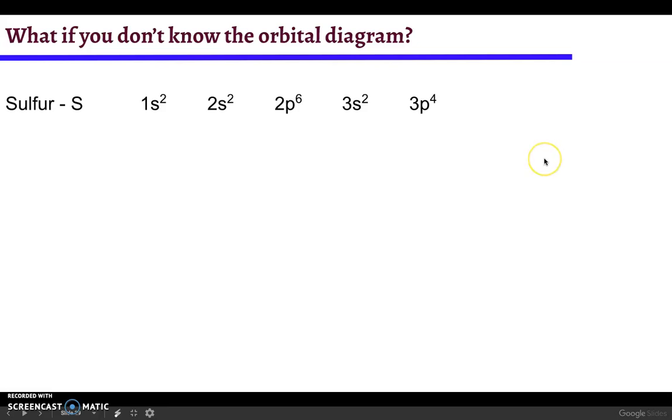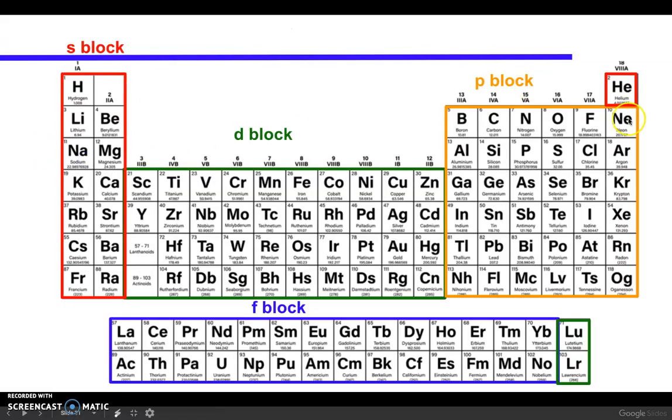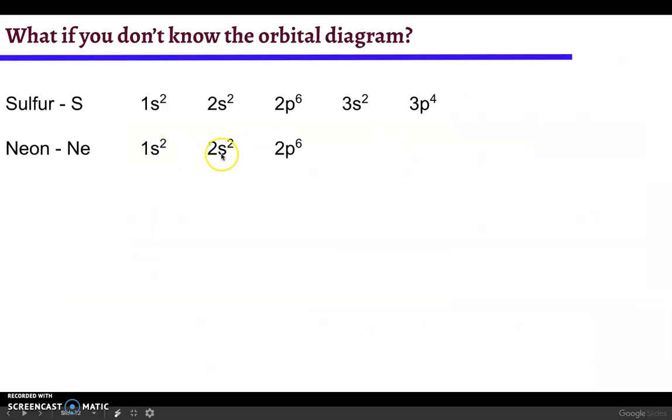You can also write an abbreviated orbital diagram. Let's just talk about the orbital diagram for neon. Neon ends at 2p6, so the electron configuration for neon is 1s2 2s2 2p6. Well, you can see that's just the front part of sulfur here.